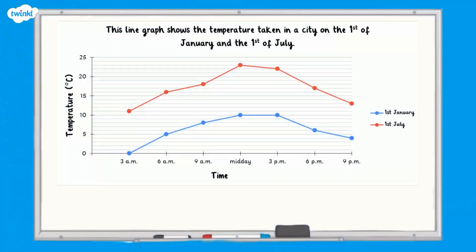Hi there. This video is here to help you read and interpret information from a line graph. Let's start by looking at this line graph that shows the temperature over the course of a day in Cardiff in January and July.